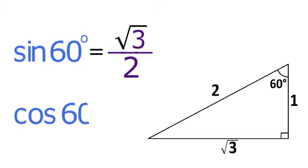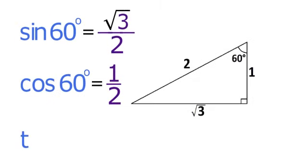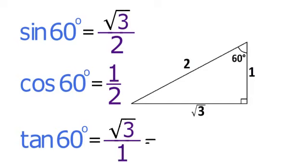The cosine of 60 degrees equals A over H, which equals 1 half. And the tangent of 60 degrees equals O over A, which equals radical 3 over 1, and simplifies to radical 3.